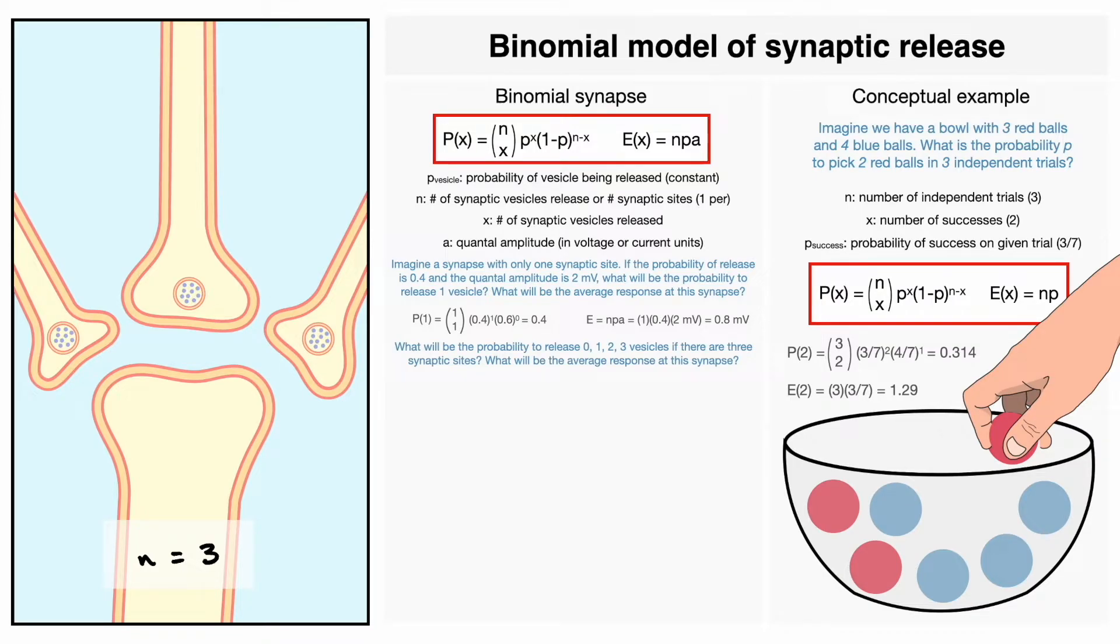To do this problem, I want to introduce a new variable named p-failure, which corresponds to 1 minus p vesicle. To make it more convenient, we will call this variable q. Now, by using the binomial equation, we can find the probability for each scenario.